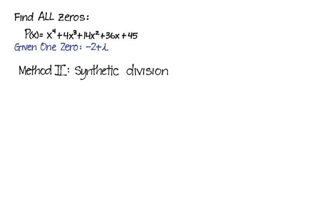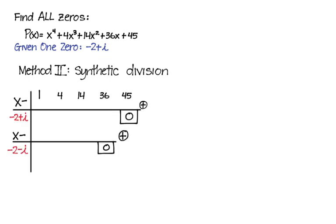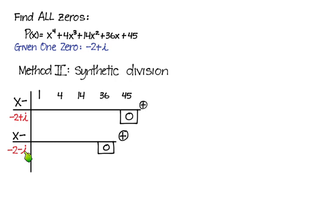For Method 2, we're going to divide by the two complex zeros. We know one zero is negative 2 plus i, so the other is negative 2 minus i. I've set up the synthetic division to do two divisions. Look carefully at how this is set up. I've already put in zero for the remainder, because we know these are zeros.